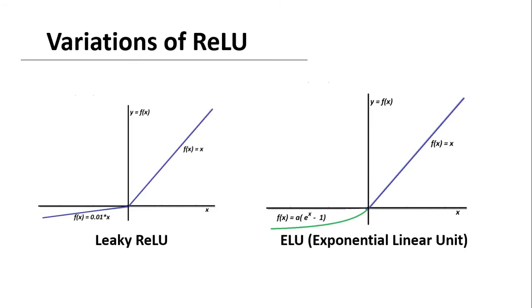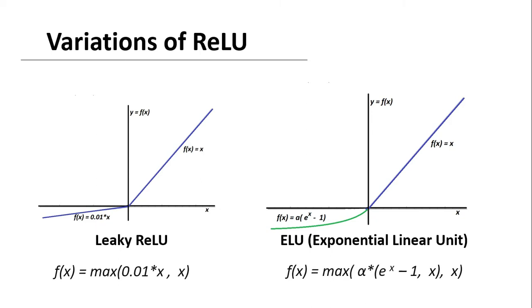There are other variations of ReLU available: leaky ReLU and the Exponential Linear Unit, or ELU. In leaky ReLU, instead of defining 0 for negative inputs, we define it with a very small linear component — 0.01 multiplied by x. In ELU we define it with an exponential component instead of 0. Both leaky ReLU and ELU work well and can be used, but nowadays ReLU is most commonly used.